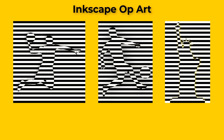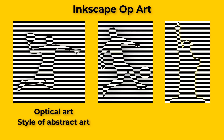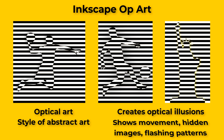So what exactly is op art? It's been around for a while and it's short for optical art. Basically it's a style of abstract art that uses various techniques to create optical illusions. And these illusions show movement, hidden images, or flashing patterns.